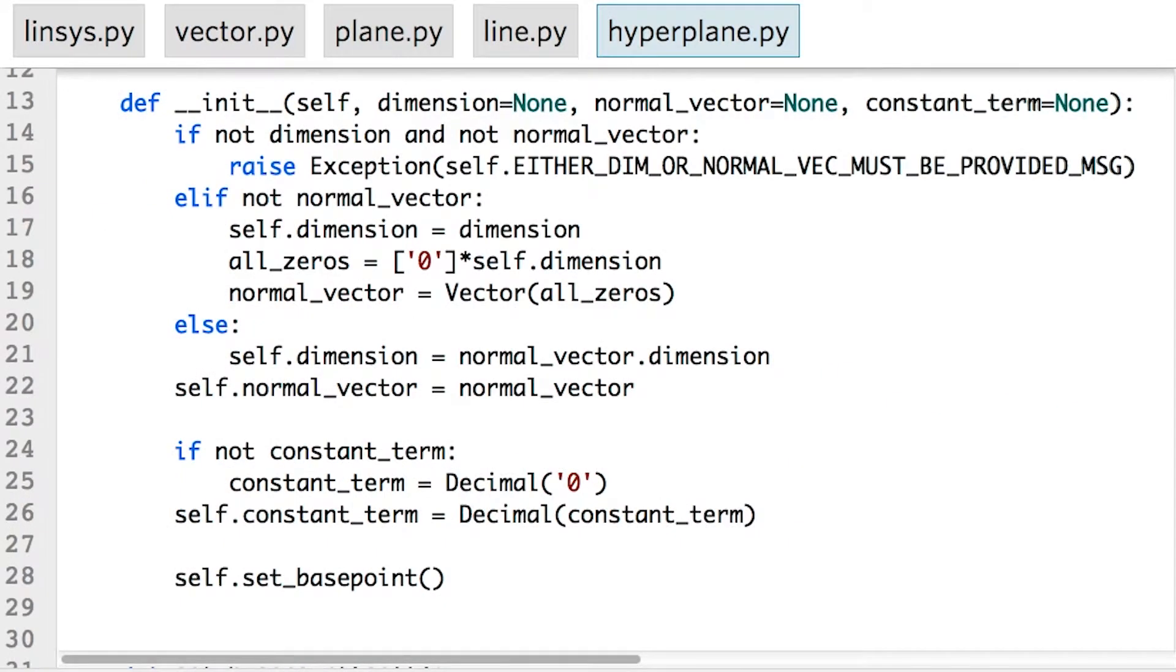To make it, I almost literally copy and paste my code for the plane object, just replacing all instances of the word plane with hyperplane. The only other change I need to make is in the initializer function. Here, since the hyperplane could live in an arbitrary dimension, I'm adding an optional parameter dimension to the list of arguments.